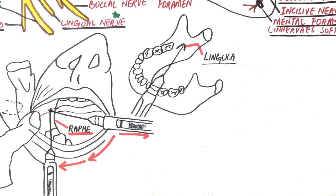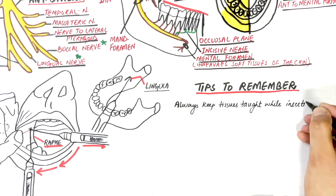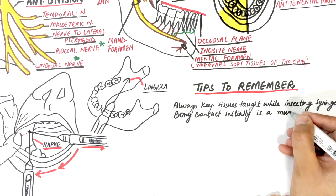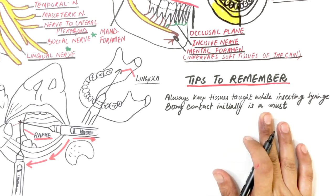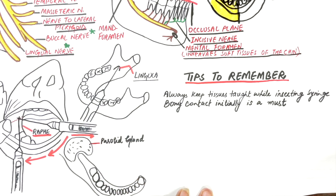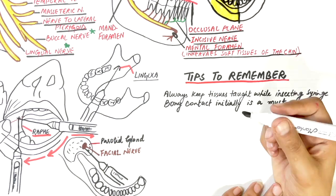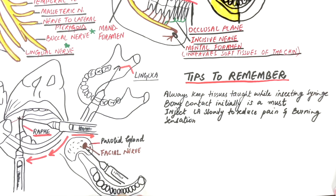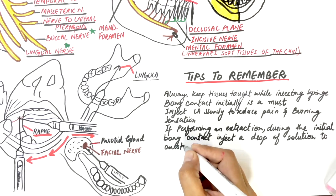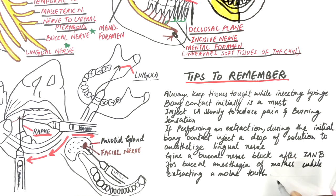Some tips to remember while giving an inferior alveolar nerve block: Always keep the tissues taut while inserting the syringe. Bony contact initially is a must — if you do not make bony contact, there is a high chance of passing deep into the parotid gland and anesthetizing the facial nerve, which leads to temporary facial nerve paralysis. Inject the local anesthetic solution slowly to avoid burning sensation and pain. If performing an extraction, during the initial bony contact inject a drop of solution to anesthetize the lingual nerve. For buccal anesthesia of molars during extraction, give a buccal nerve block after the inferior alveolar nerve block.